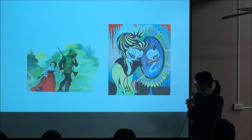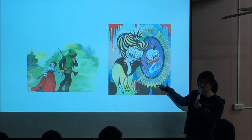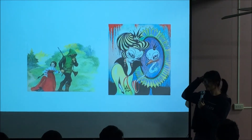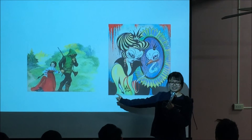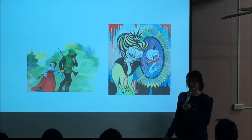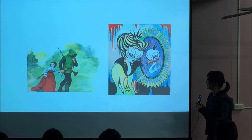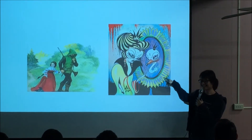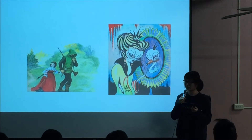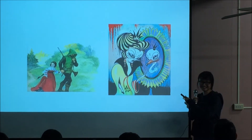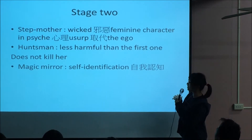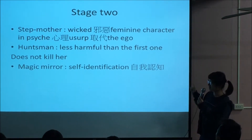Then the king marries a new wife — the evil queen. She sends the huntsman to kill Snow White, but he does not kill her. He brings back a deer's heart to deceive the evil queen. The evil queen always asks her magic mirror: who is the most beautiful girl in the world? And the mirror always answers her.